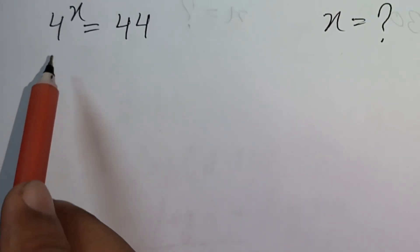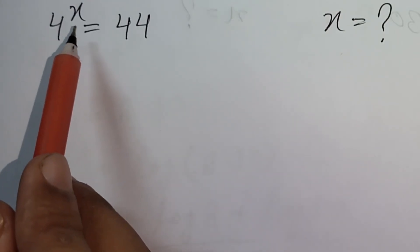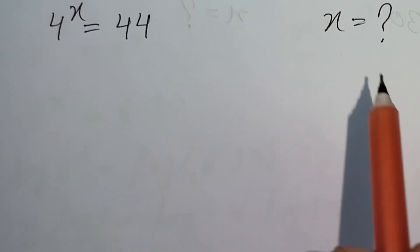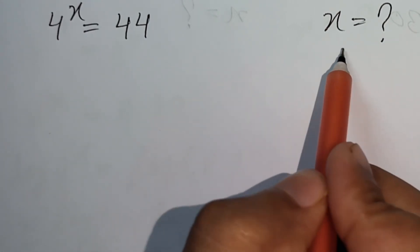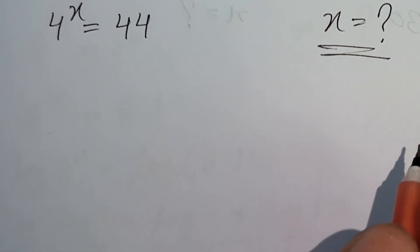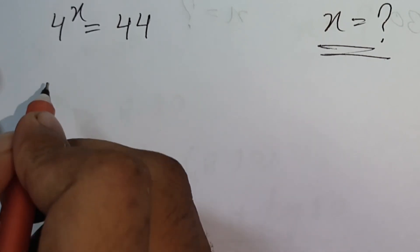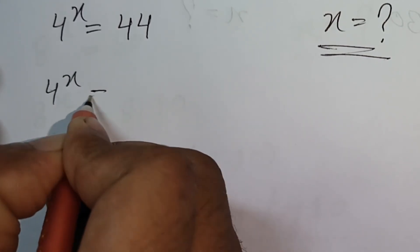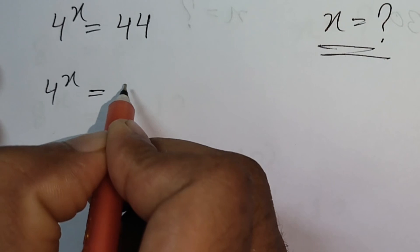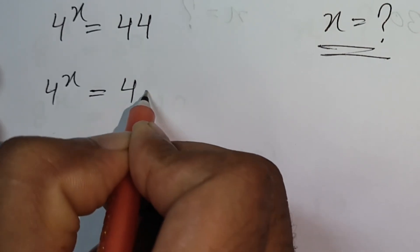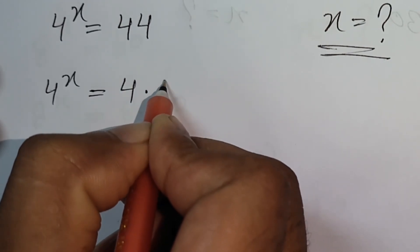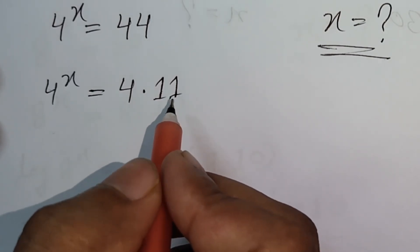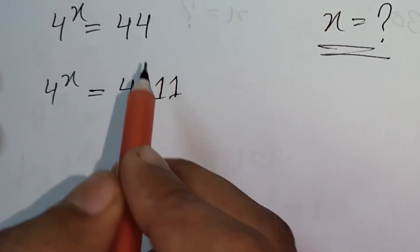How to solve 40 to the power x is equal to 44. First of all, 40 to the power x is equal to 4 times 11. 4 times 11 is equal to 44.